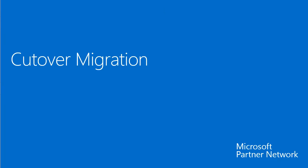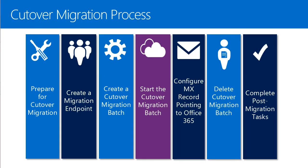Let's start with the cutover migration. Cutover migration is the least complex of these three types. Here you can see a typical process flow: the first three steps are preparation tasks, the actual migration where data is synchronized happens in the fourth step, and the remaining steps are a not-too-time-consuming sequence of other tasks. I will explain all of these in more detail in the next slides.